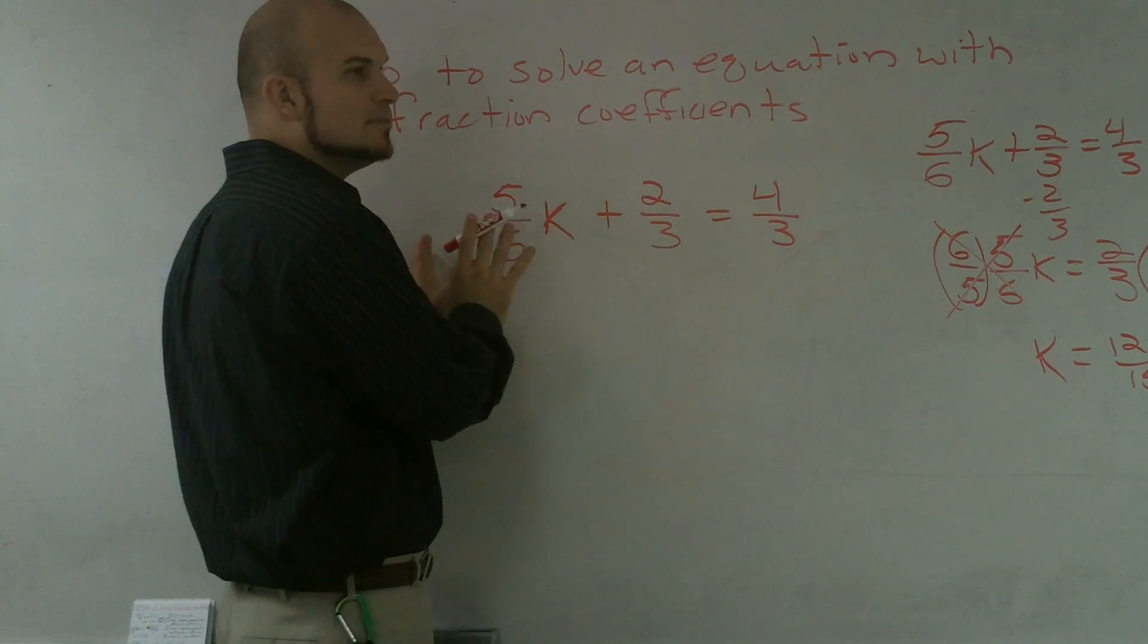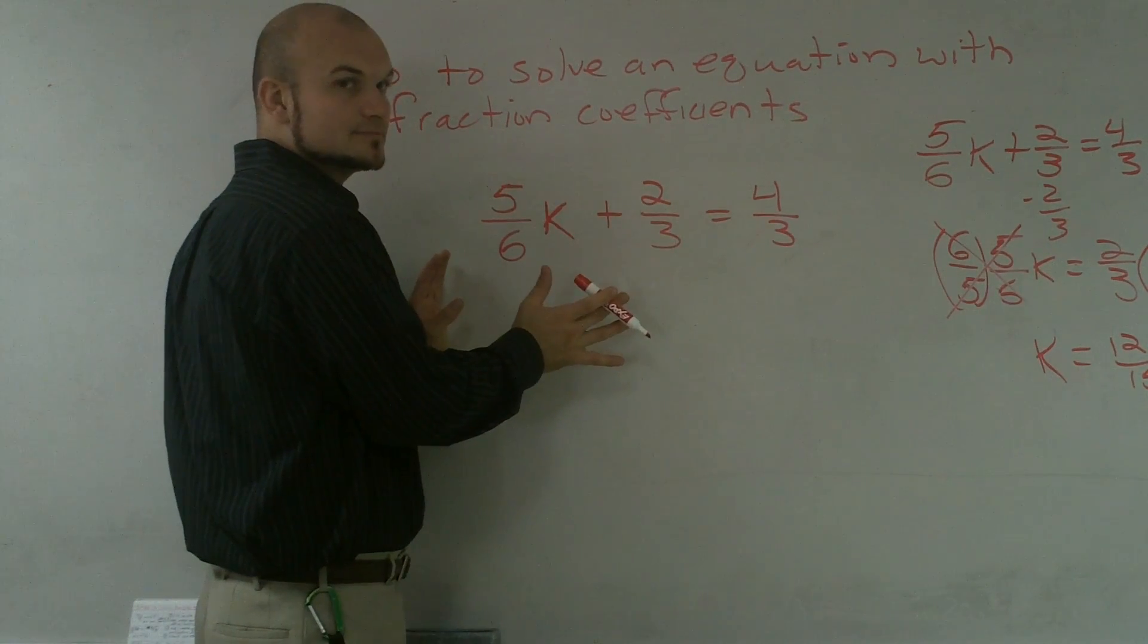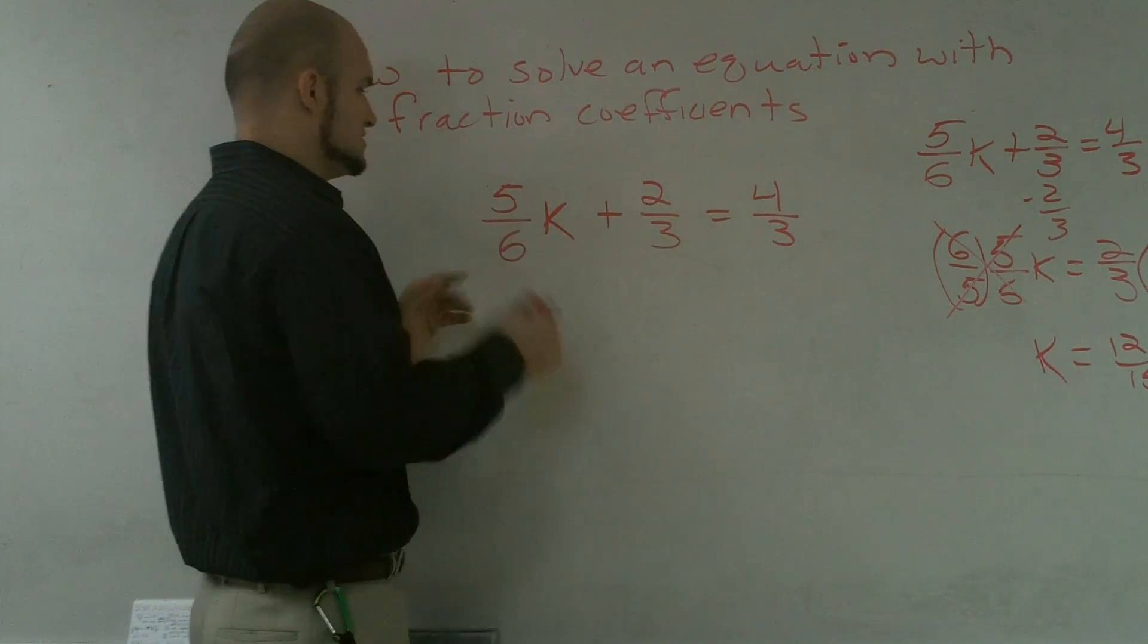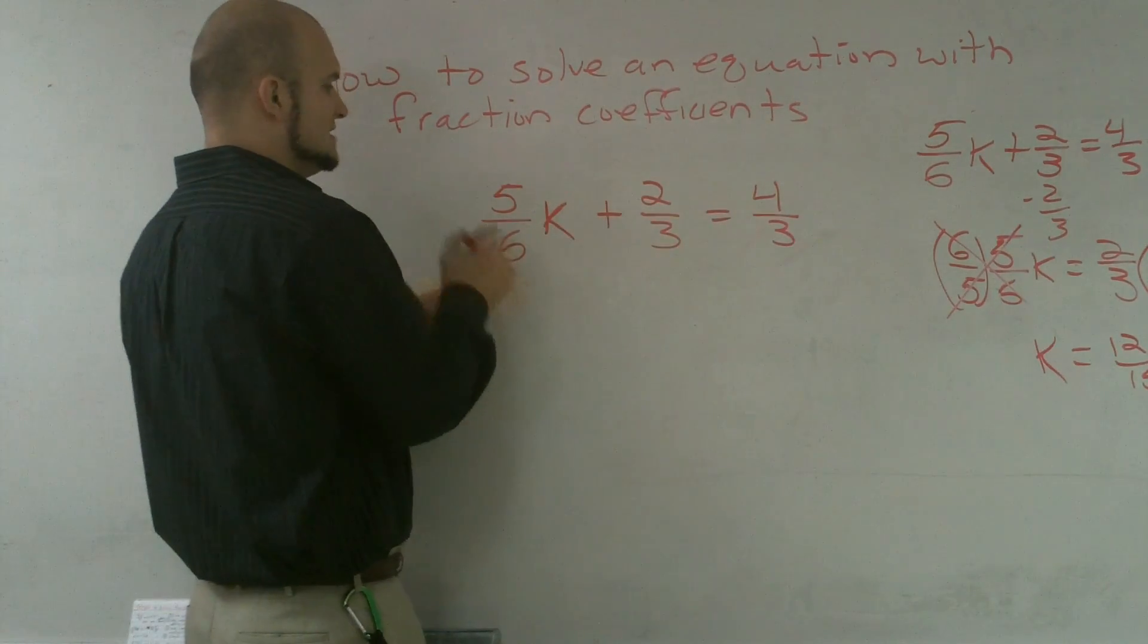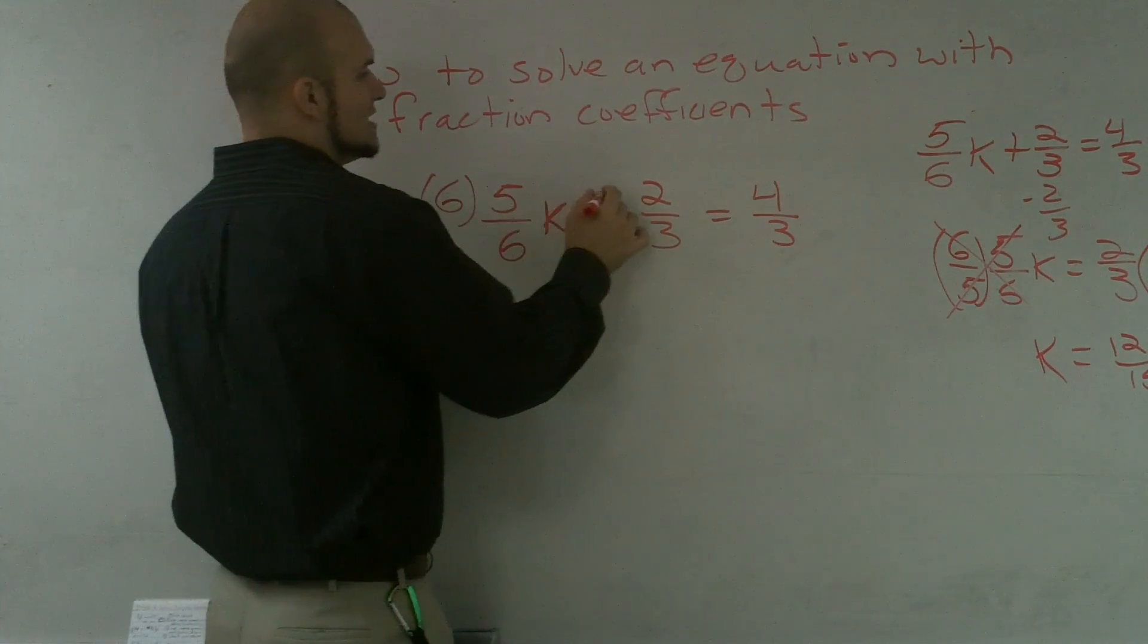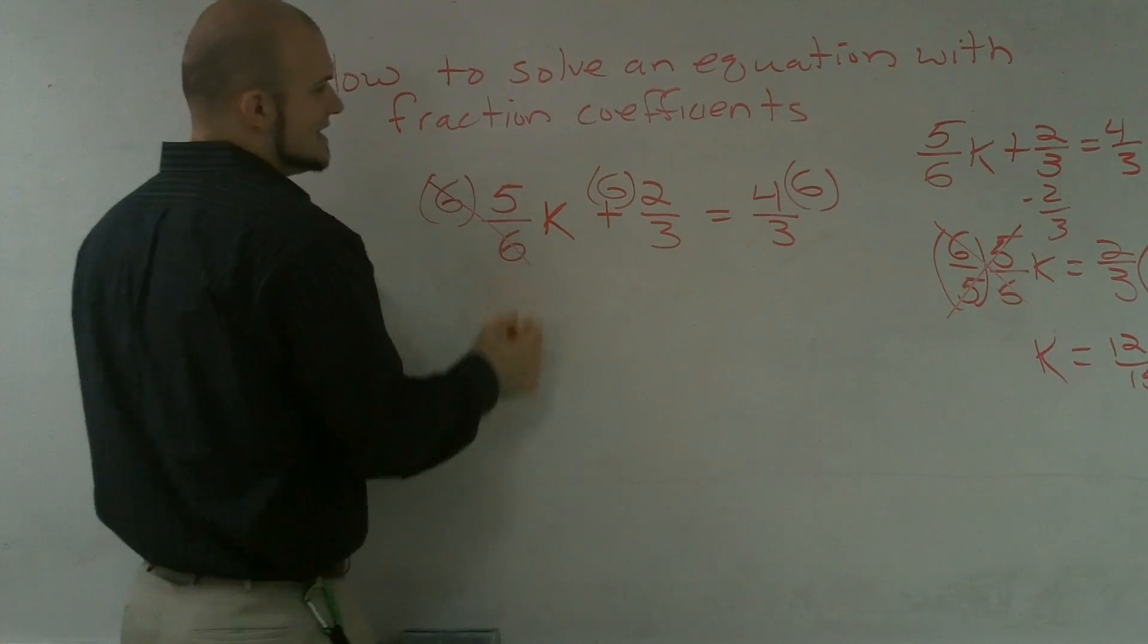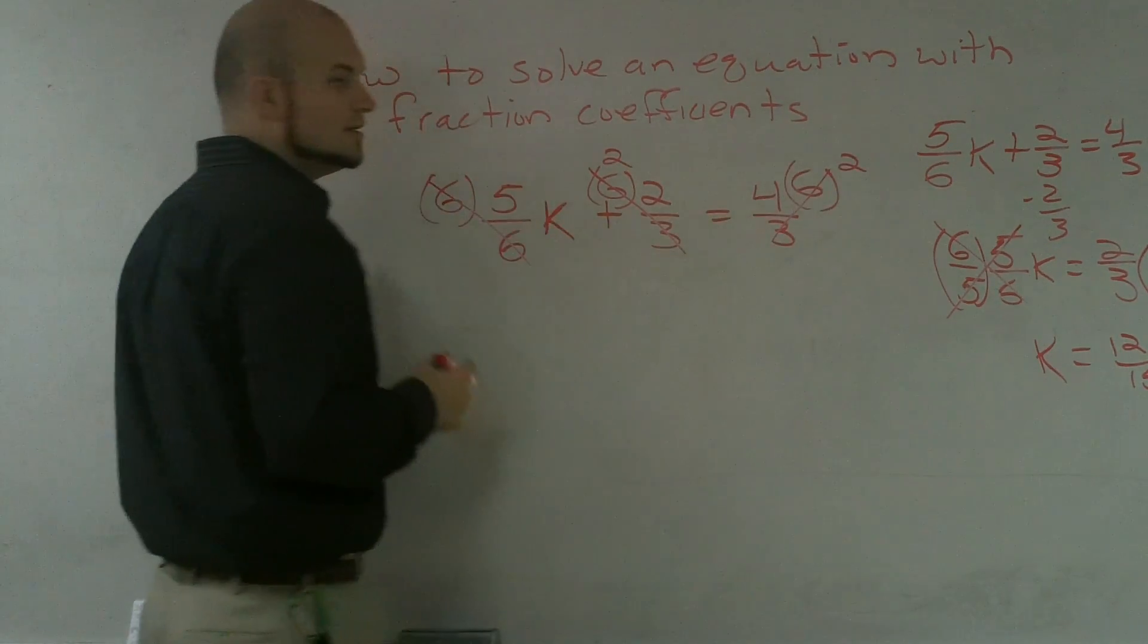I want to make sure what I'm going to do is I'm going to multiply everything by our common denominator. And what that's doing is that's kind of undoing the division that's happening in each one of these fractions. So if I look at the common denominator between all three of these fractions is six. So if I multiply every fraction by six, what I have just done is now eliminated our fractions.